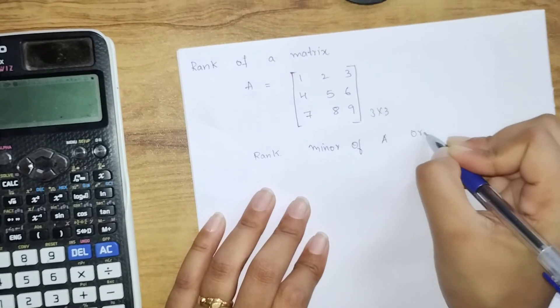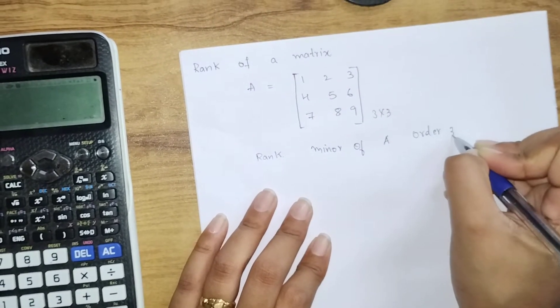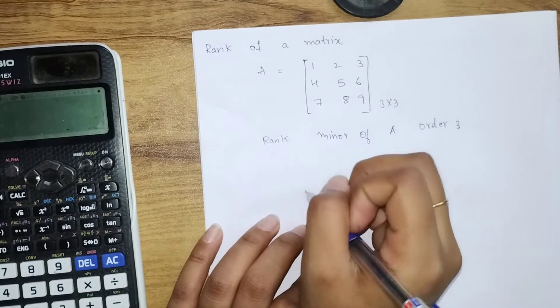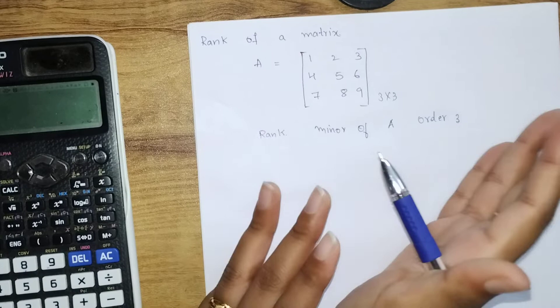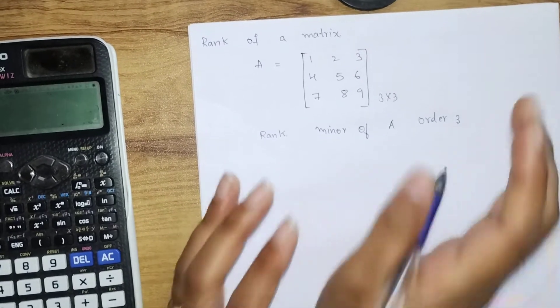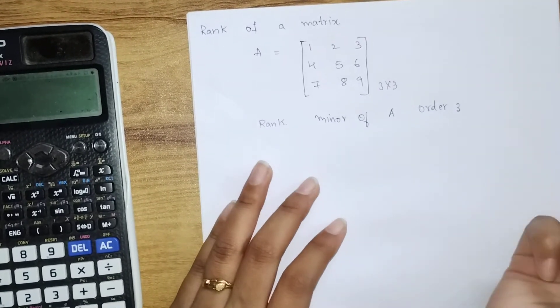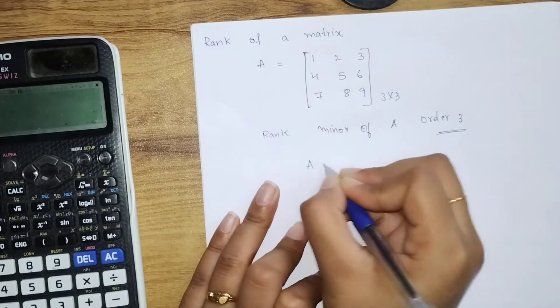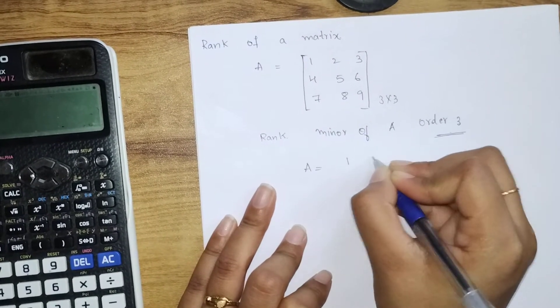First we are going to find the determinant of the matrix. The determinant should be non-zero. If it is non-zero, then the rank will be equal to the order of that matrix. So we are finding the determinant of A.